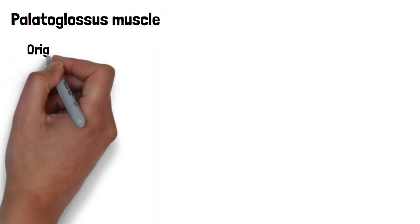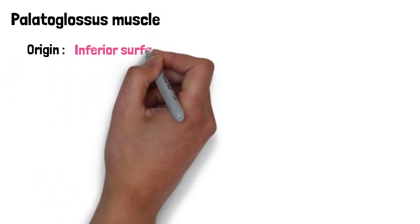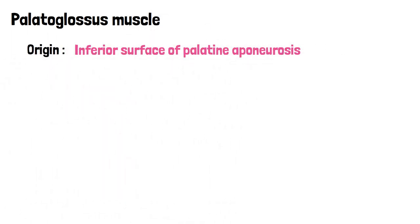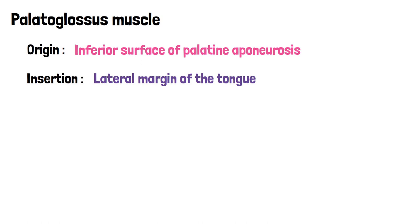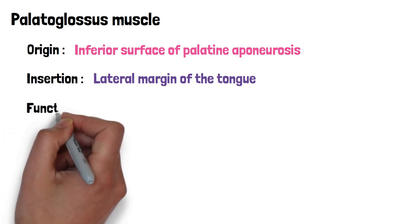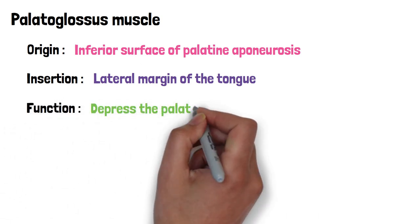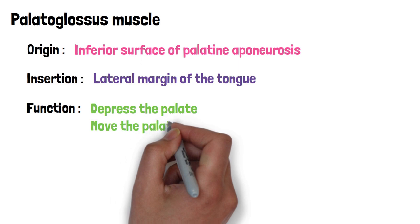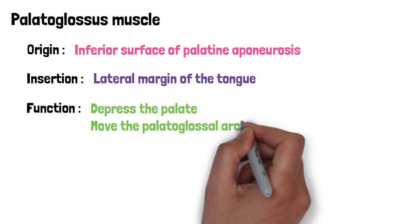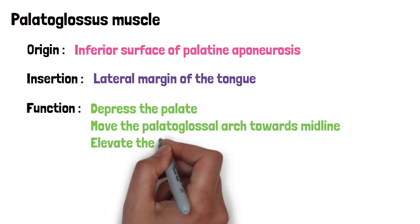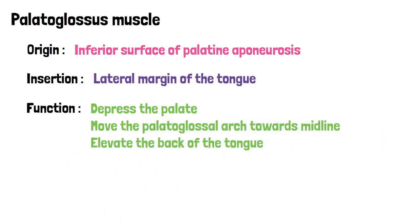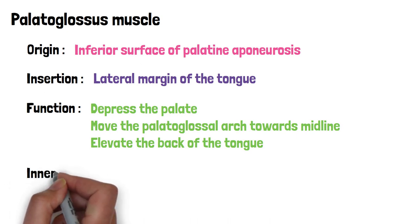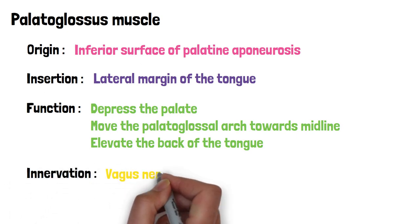The palatoglossus muscle originates from the inferior surface of the palatine aponeurosis and inserts into the lateral margin of the tongue. Its functions are to depress the soft palate, move the palatoglossal arch towards the midline, and also elevate the back of the tongue. The palatoglossus muscle is also innervated by the vagus nerve.